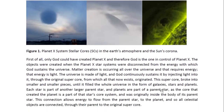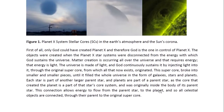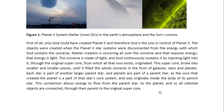You can see this one making a connection there in the Sun's atmosphere. First of all, only God could have created Planet X, and therefore God is the one in control of Planet X. The objects were created when the Planet X star systems were disconnected from the energy with which God sustains the universe. Matter creation is occurring all over the universe and that requires energy. That energy is light. The universe is made of light, and God continuously sustains it by injecting light into it through the original super core from which all that now exists originated. The super core broke into smaller and smaller pieces until it filled the whole universe in the form of galaxies, stars, and planets.